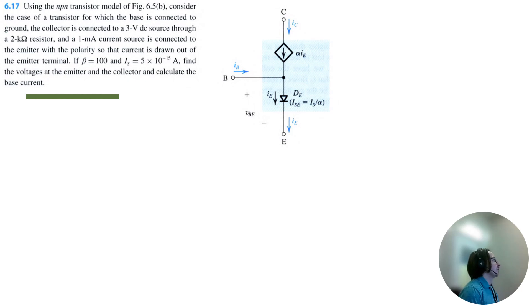Let's start drawing this. The collector has a 3 volt DC source through a 2 kilohm resistor. We have our collector terminal. This will be the voltage of the collector. We have this dependent current source showing that the collector current is equal to alpha times the emitter current.